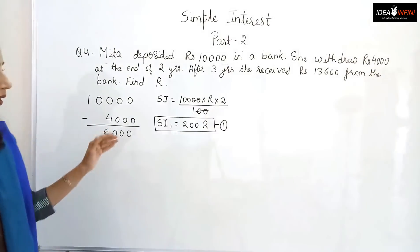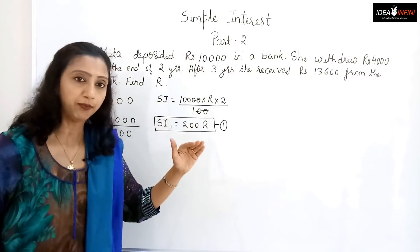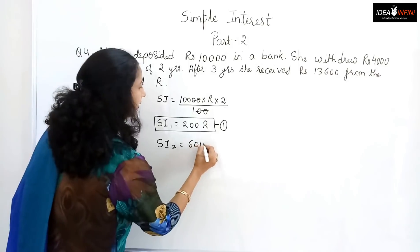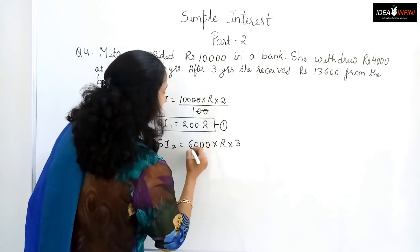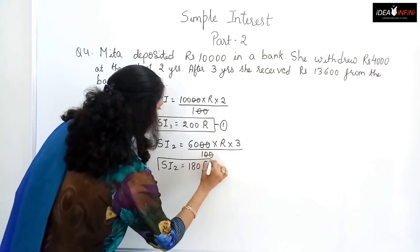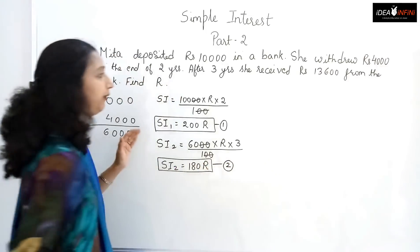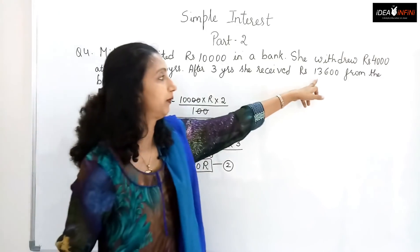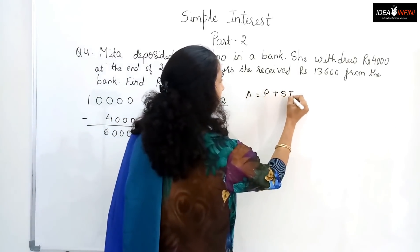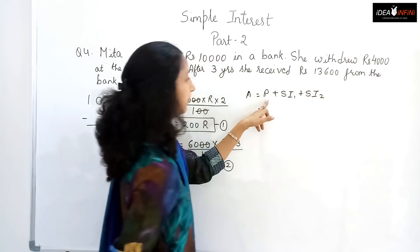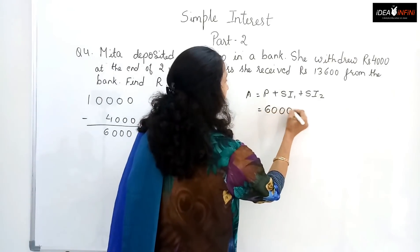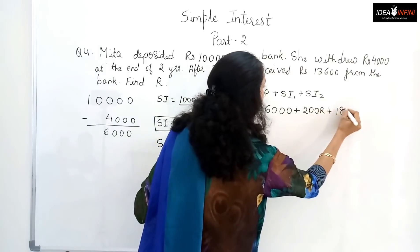The ₹6,000 remaining earns interest for the next three years (the total duration is five years). SI₂ = 6,000 × R × 3 / 100 = 180R. After five years she receives an amount of ₹13,600. The amount includes the remaining principal of ₹6,000 — not ₹10,000 because she already withdrew ₹4,000 — plus SI₁ and SI₂. So: 6,000 + 200R + 180R = 13,600.